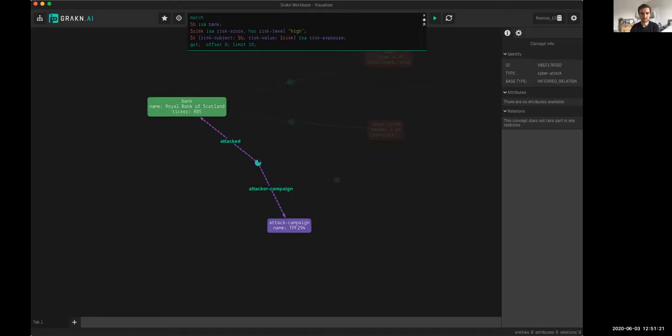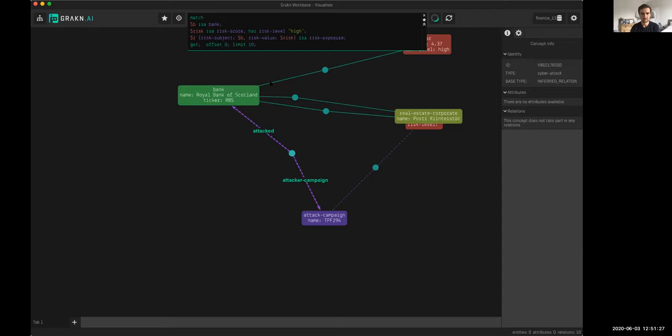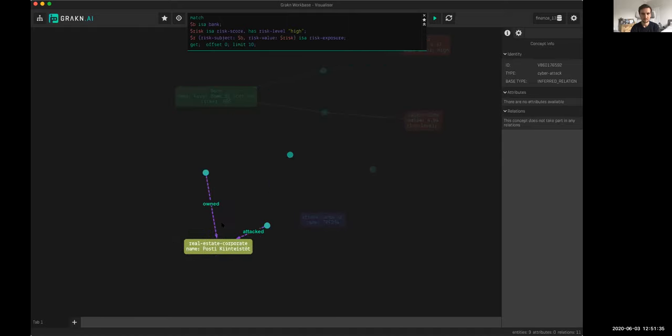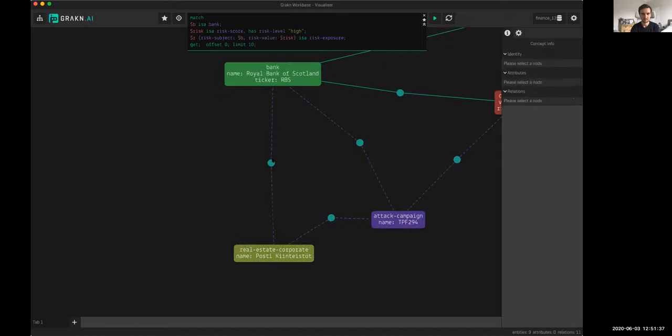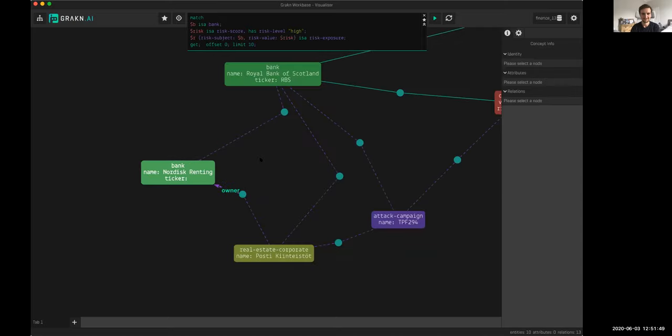If I press explain on this relation, I see that it's not actually RBS itself as a legal entity under attack. It's this real estate corporate called Poste Quintestor that is under attack. It gets more interesting because Poste Quintestor isn't directly owned by RBS. It's a subsidiary of another subsidiary of RBS, in this case a company called Nordisk Renting.